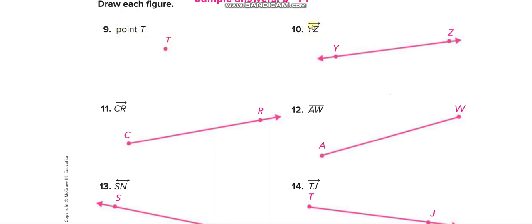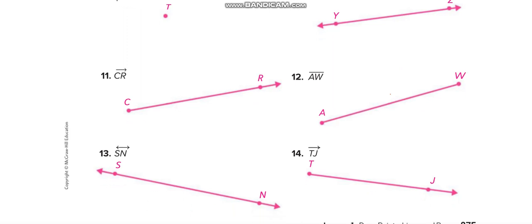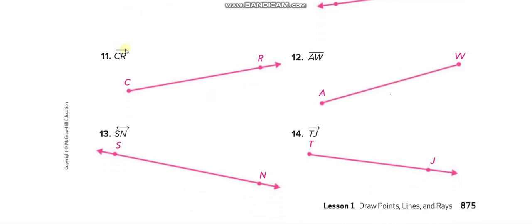YZ has two arrows above it, so draw Line YZ. CR has a single arrow, so draw Ray CR. AW has no arrows, so draw Line Segment AW. SN has two arrows, so draw Line SN. TJ has a single arrow, so draw Ray TJ.